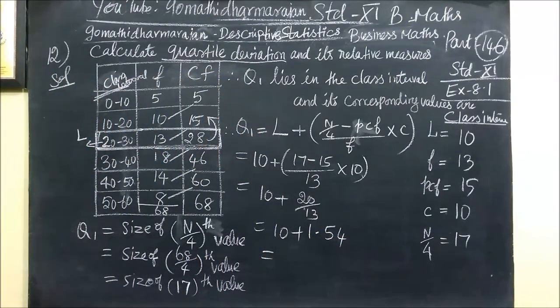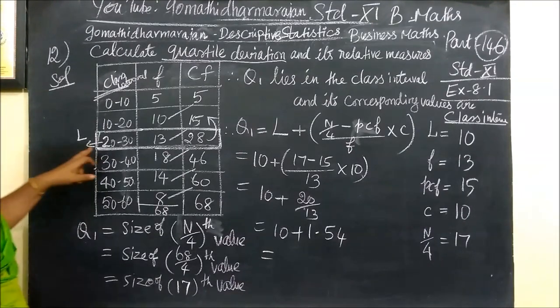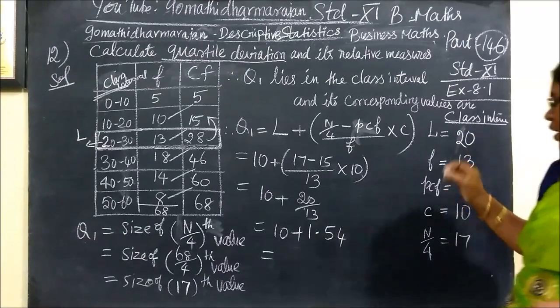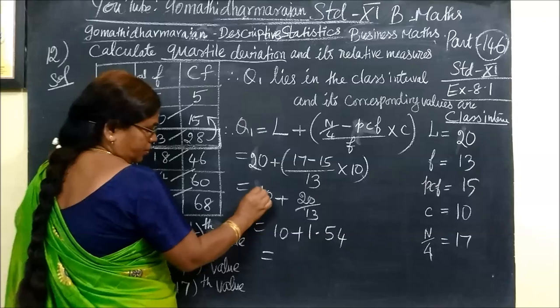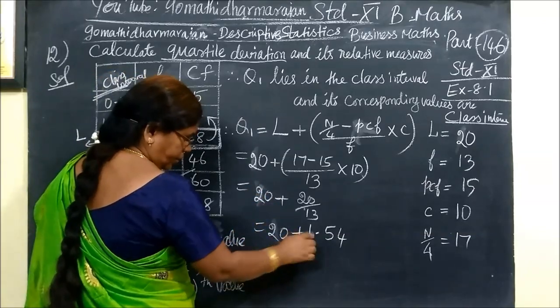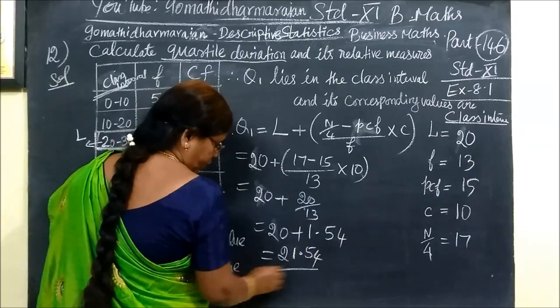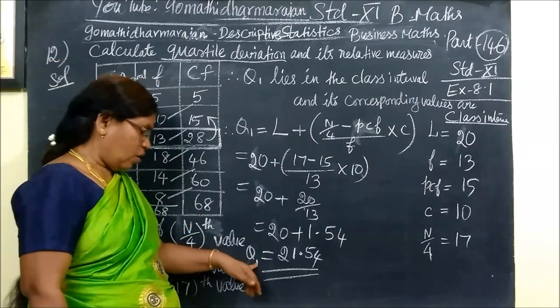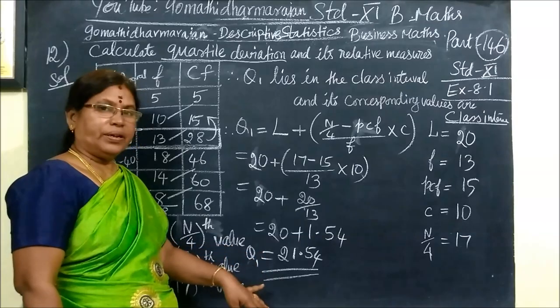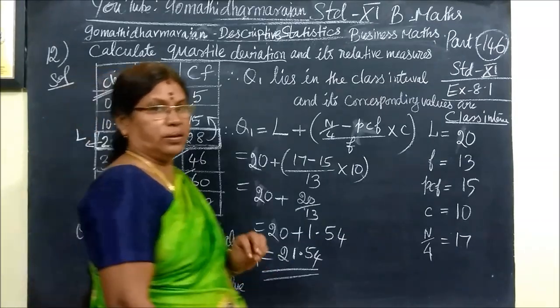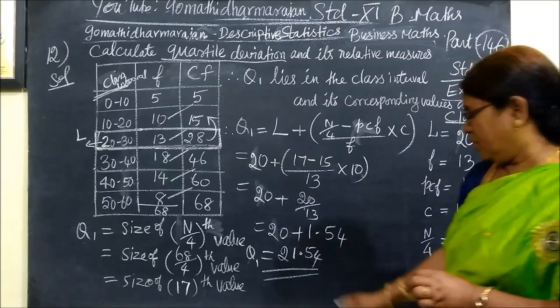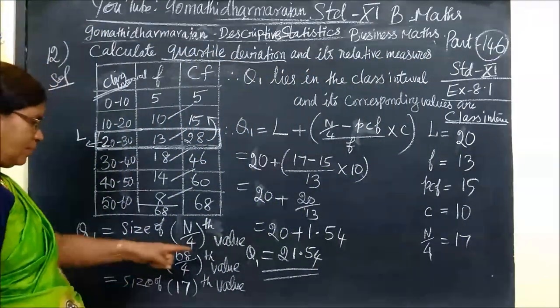Let me verify - that's 20, then 20.03. Actually it's 21.54. That's correct, Q1 equals 21.54.